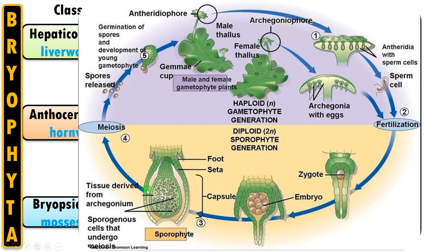The sporangia cells undergo meiosis forming spores. Later the spores are released and germinate upon falling on a suitable substratum, and again the gametophytic phase begins. In general in bryophytes, the dominant phase is the haploid gametophytic phase and the sporophyte is dependent or parasitic on the gametophytic phase.